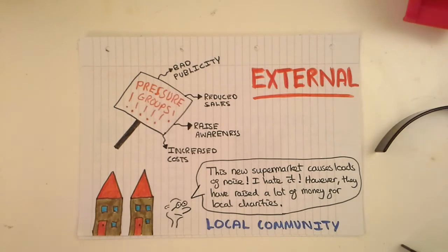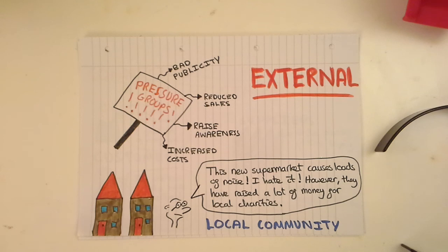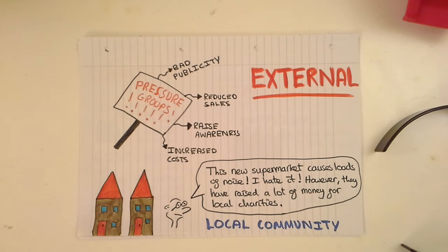Next, we have our external stakeholders and these are people outside of the business who are often indirectly affected by our business. For example, a local community might be really annoyed at our new supermarket. This could be for a variety of reasons: maybe they pollute a lot, maybe they keep their lights on really late at night which keeps people up, or they could make things really noisy, especially if there's lots of people driving there late at night.